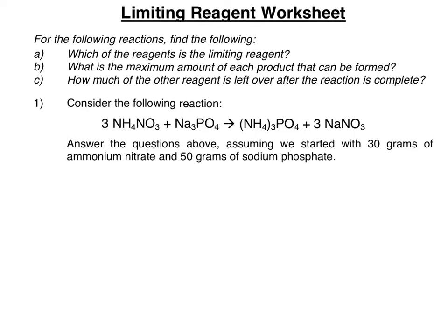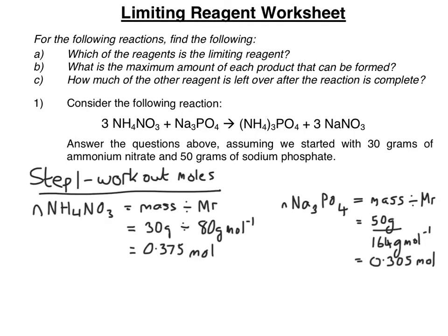So let's do the first one. So if we first start working out the moles for our two reagents, you can see you've got 0.375 moles of ammonium nitrate and 0.305 moles of sodium phosphate.